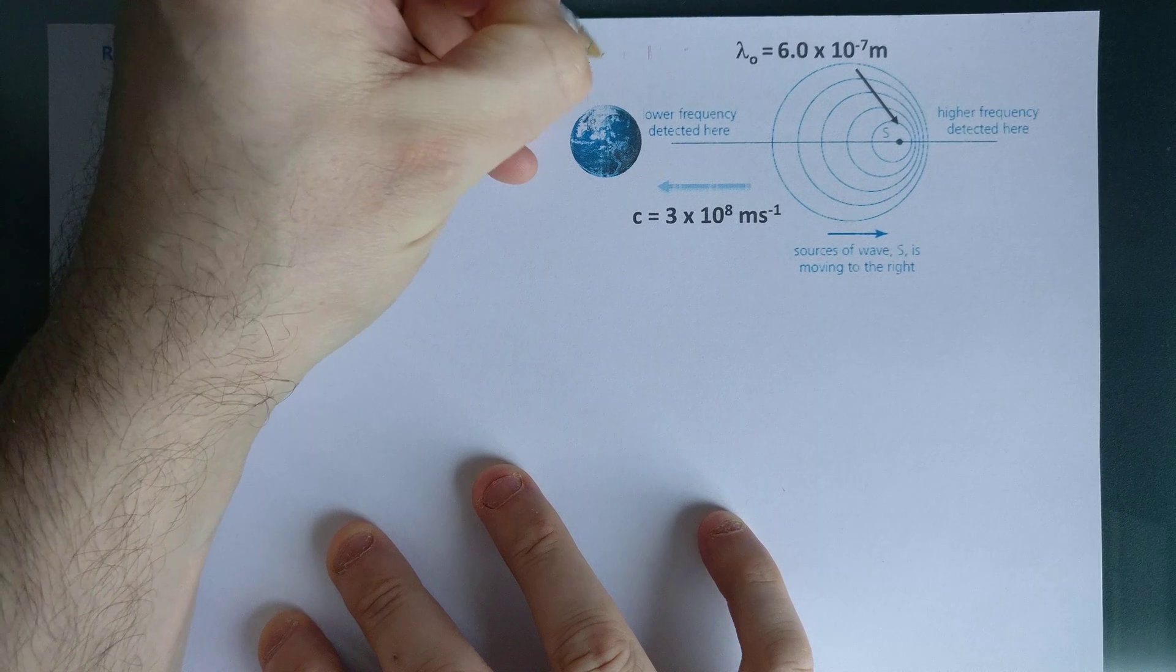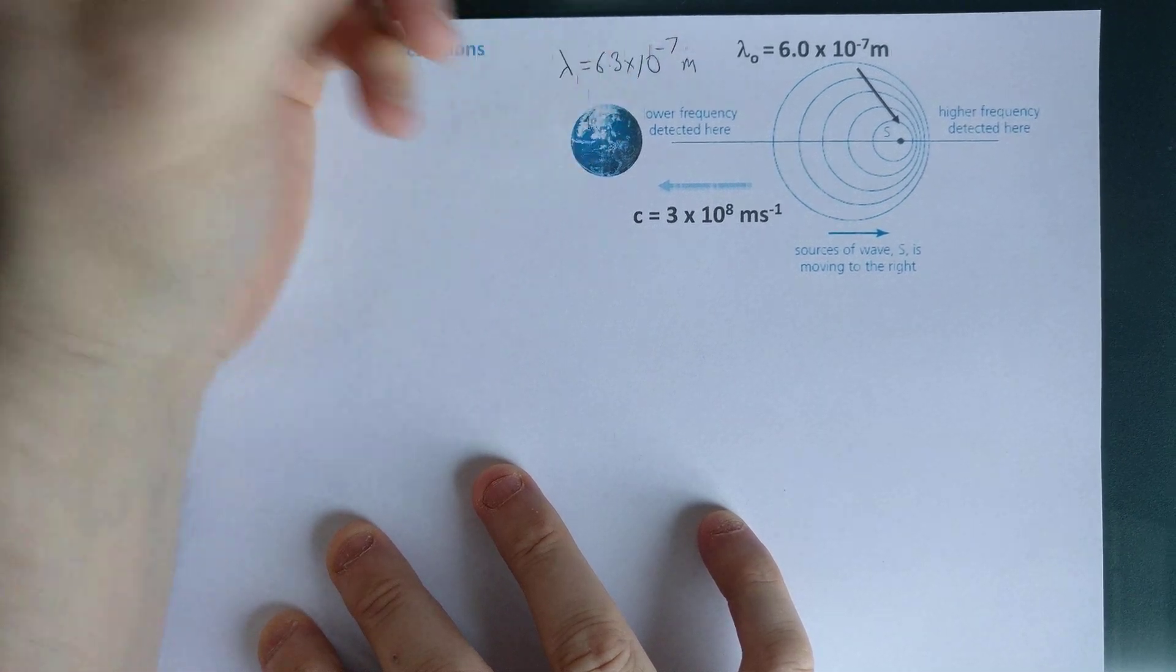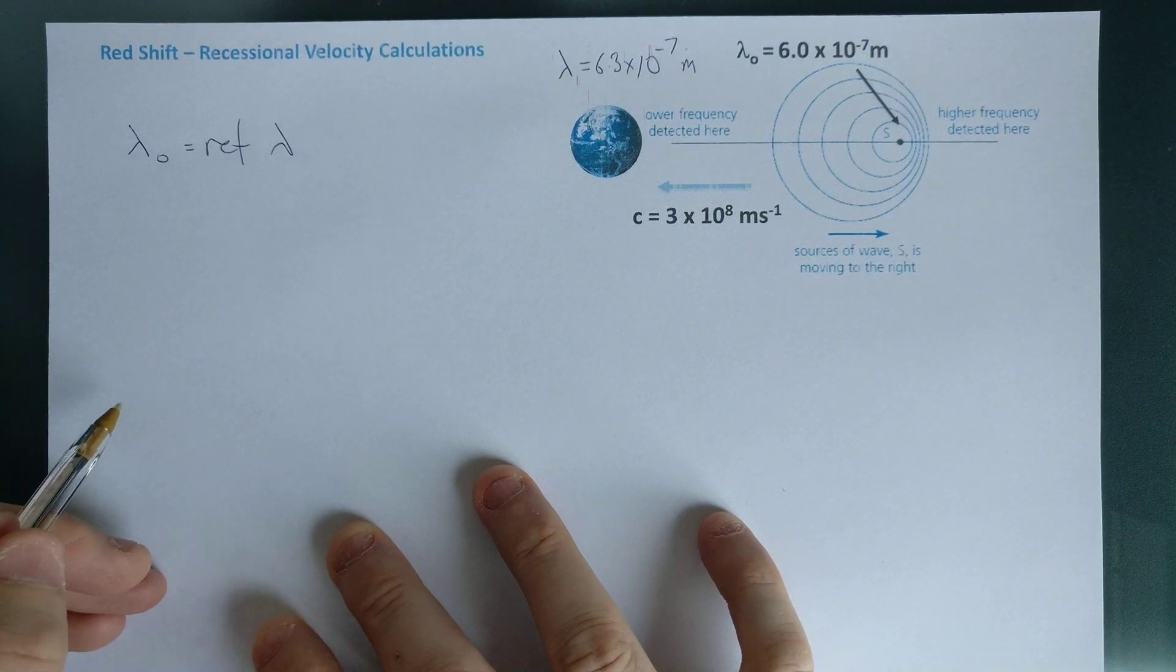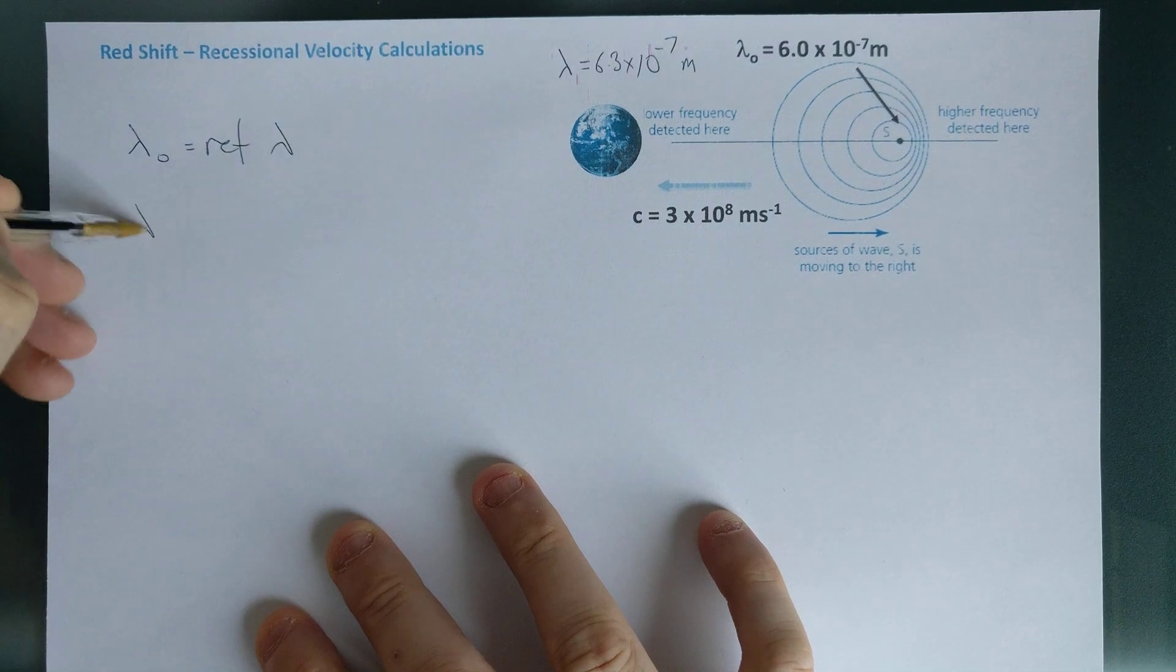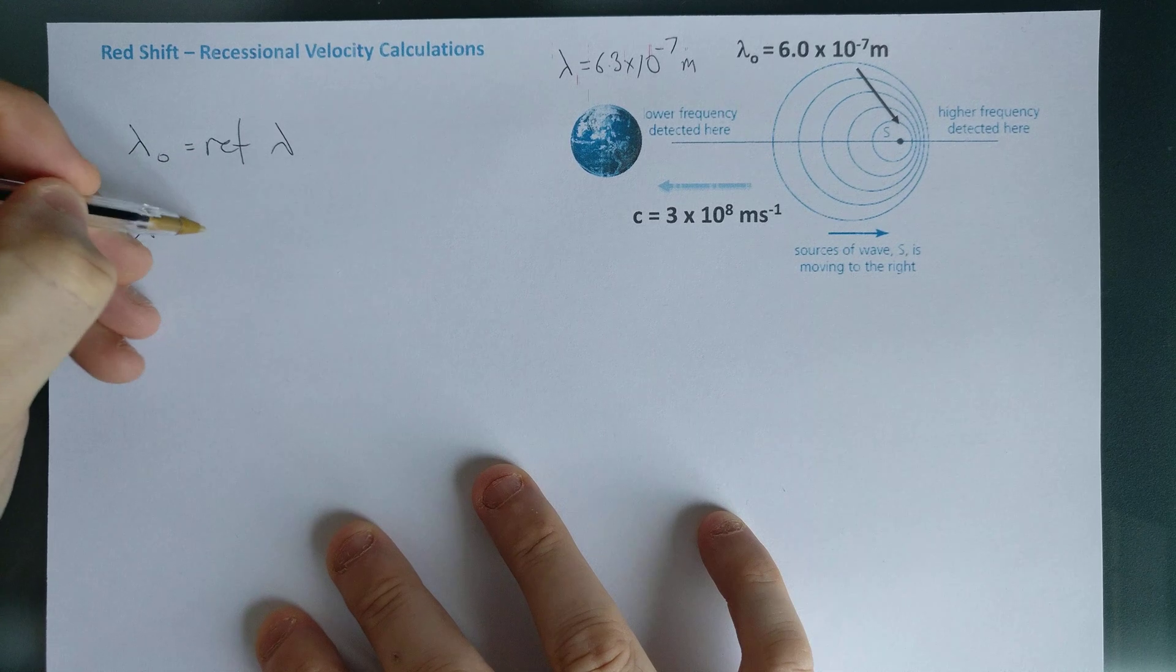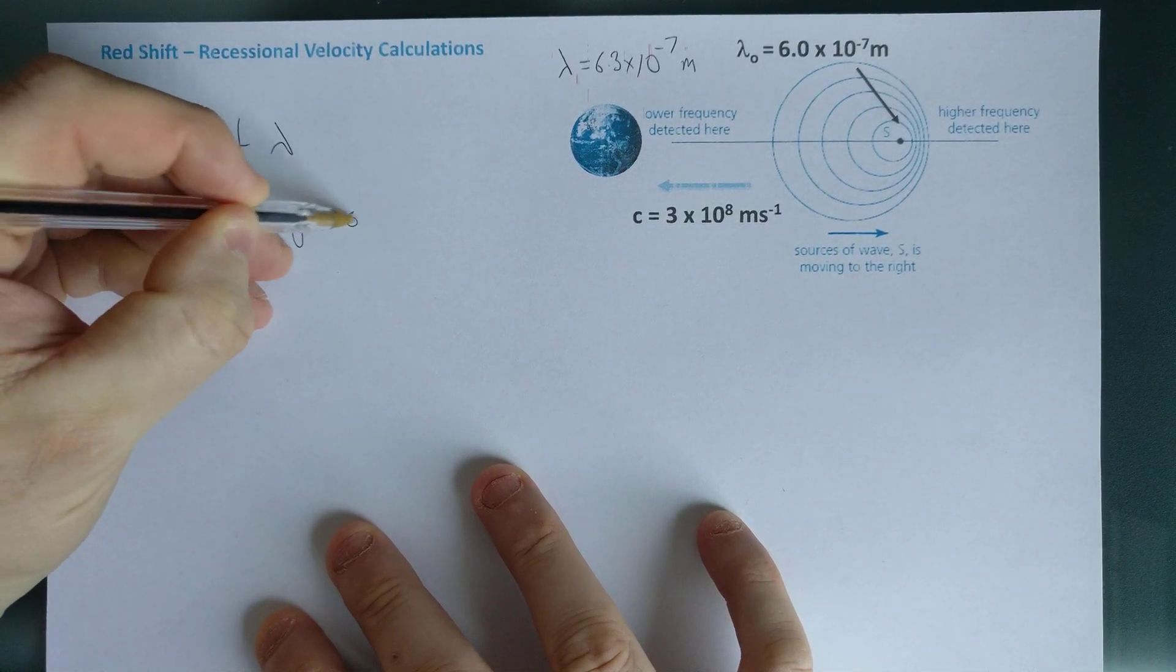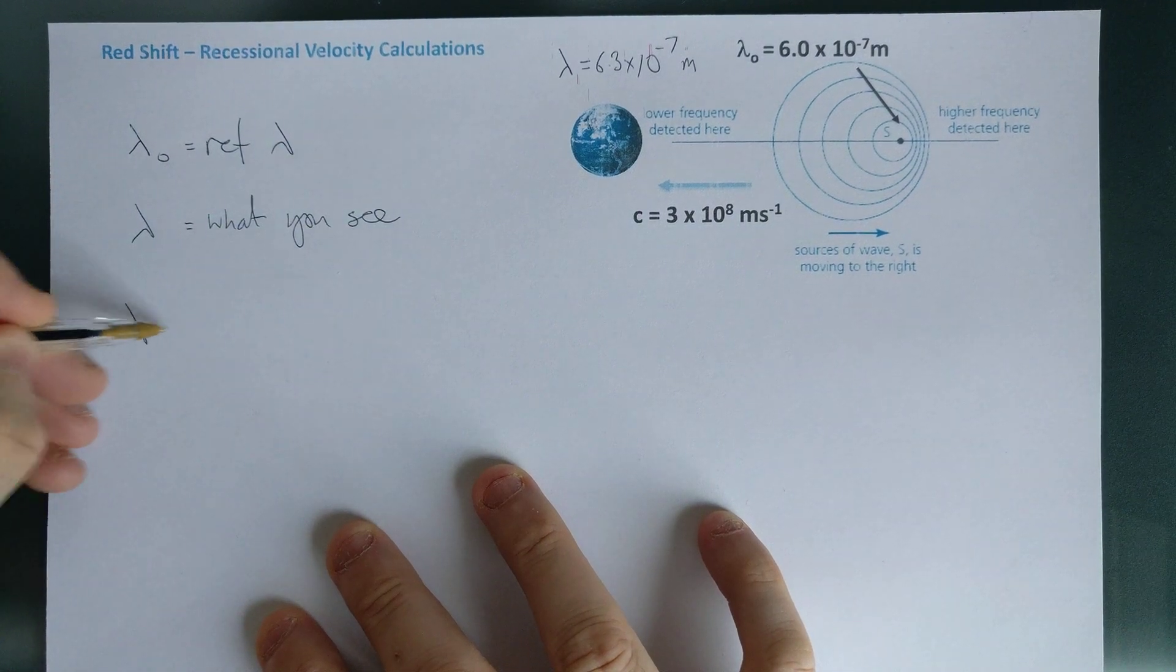So by the time it gets to Earth, lambda now is 6.3 times 10 to the minus 7 meters. So actually what's happened is we have got a wavelength that is longer. So when the light arrives at planet Earth, lambda, which is the one that we see, so what you see, that's the wavelength there.